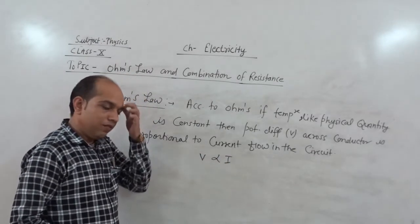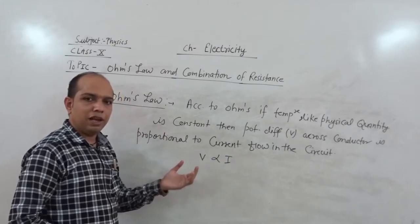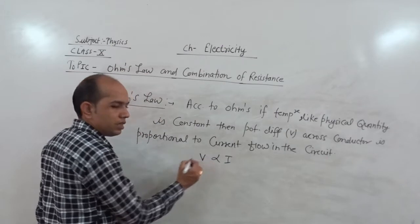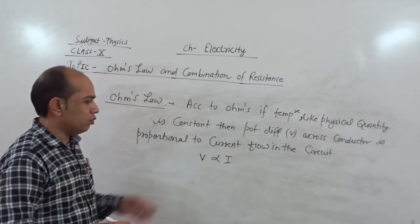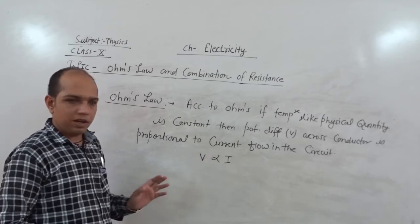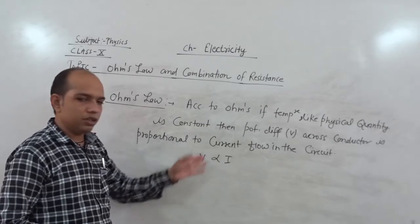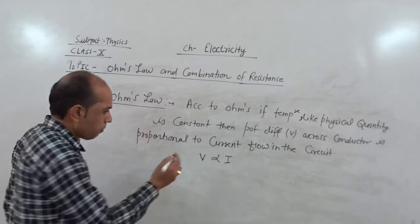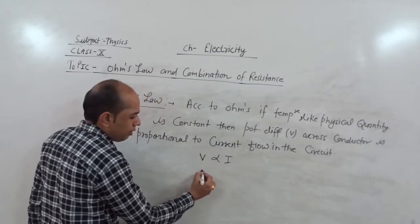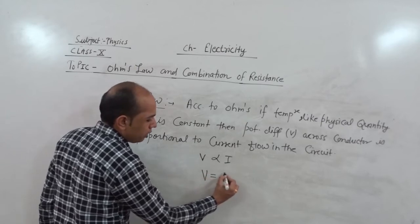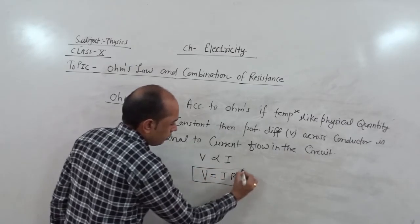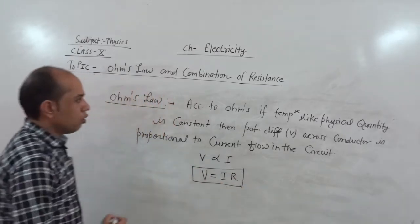This relation also indicates that when we increase the potential with the help of a battery, the current is also increased in the same manner. That means when we use a 2V battery, the current is of the order of 2. Similarly, when we increase the voltage, current is also increased in the same manner. When we remove the proportionality sign, a constant is added, so V is equal to IR.